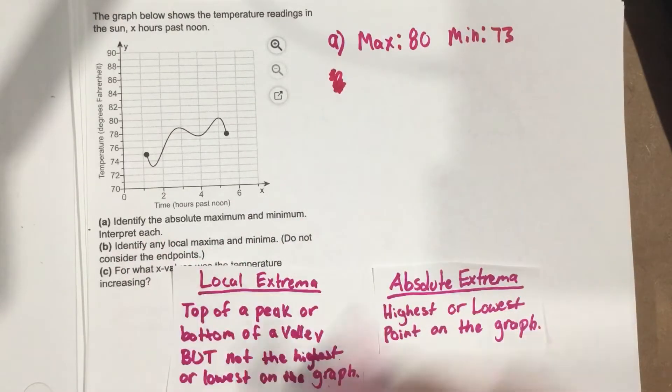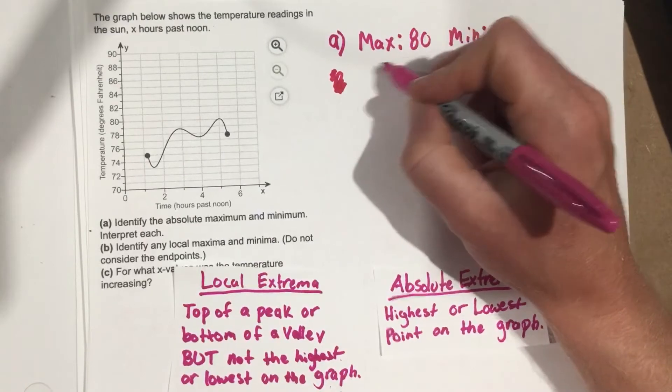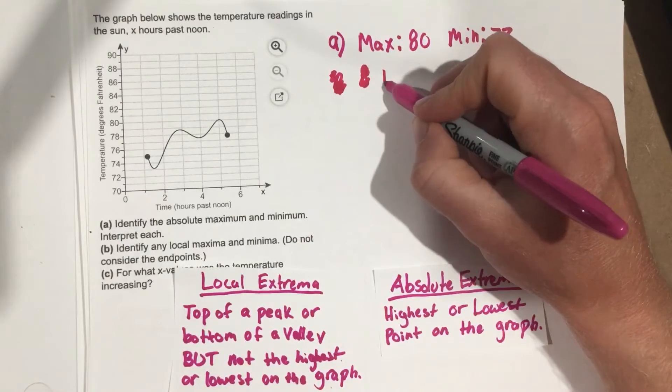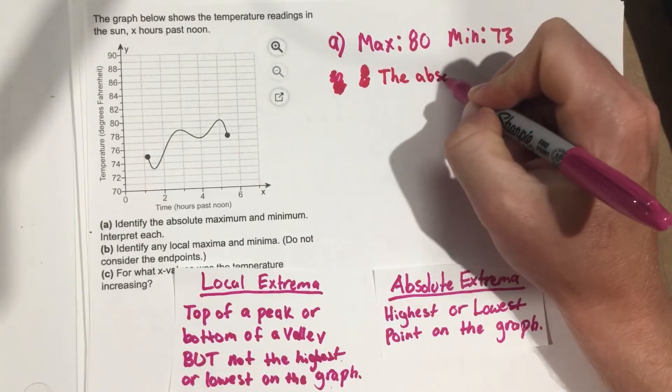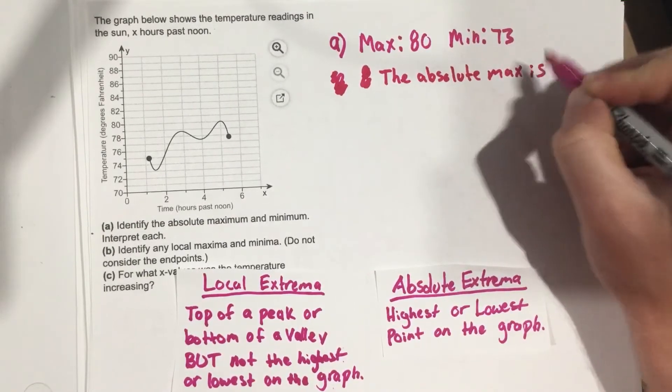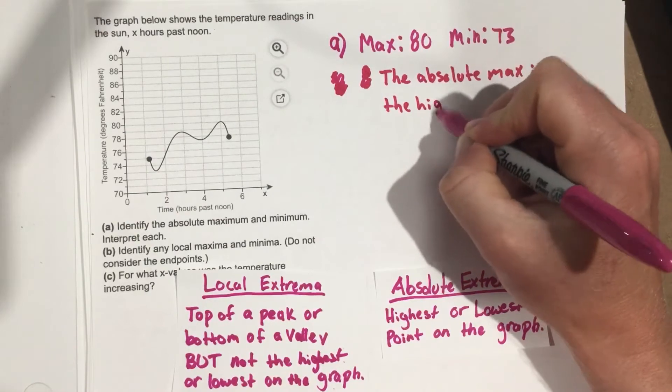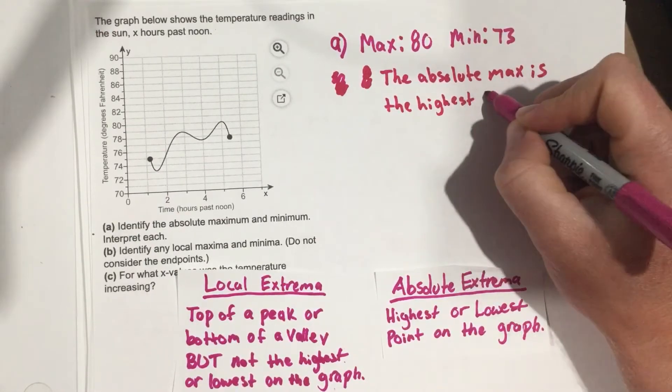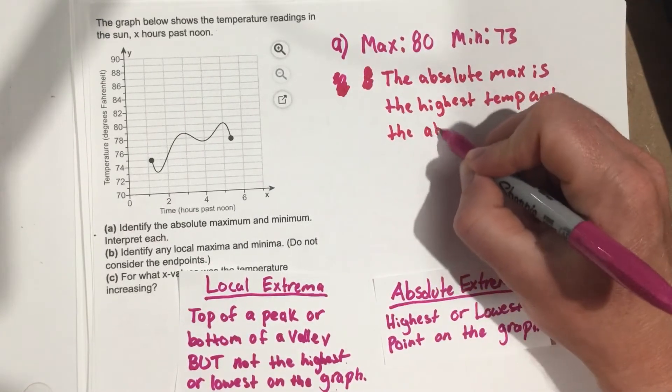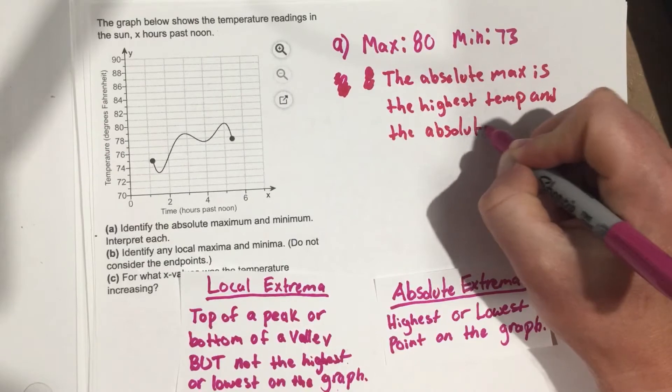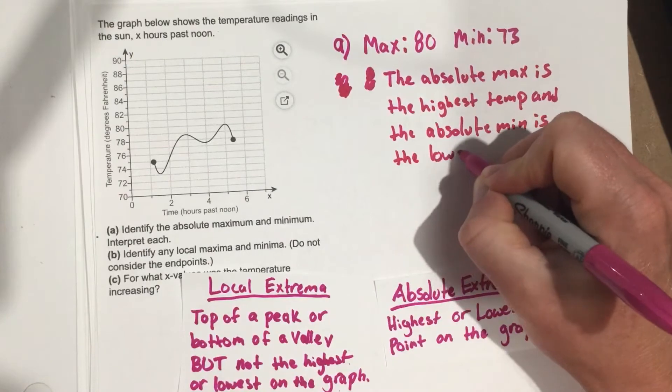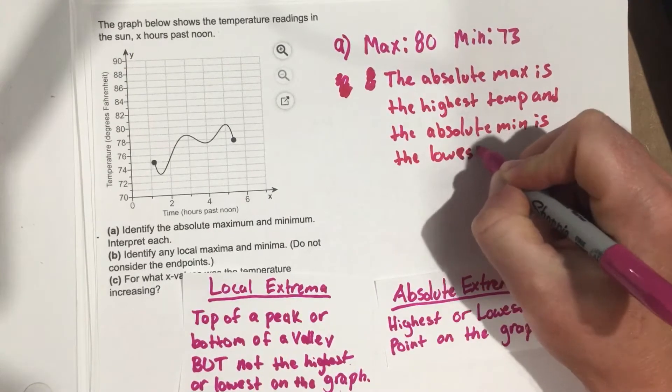Now to interpret each: the absolute max of 80 is the highest temperature, and the absolute min of 73 is the lowest temperature.